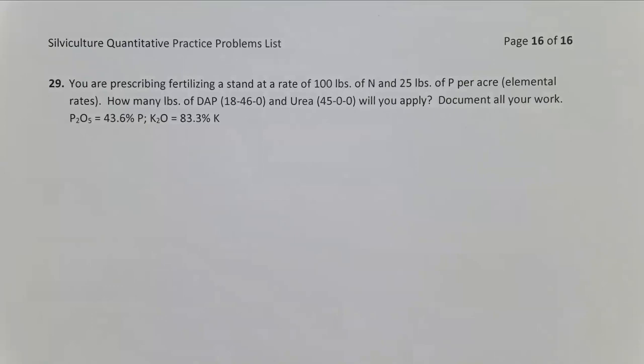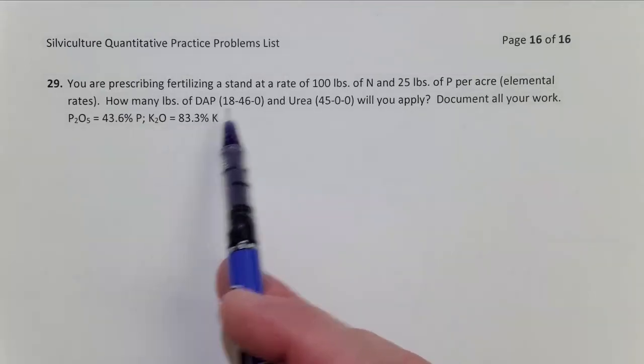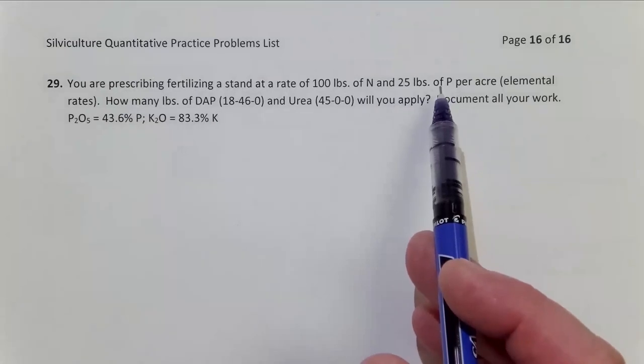So as we look at this problem, I'm going to show you a shorter way to do this because in the last two problems on fertilizer, you've seen how I've written everything out longhand. So I'll show you a shorter way to write this. So let's simply figure out how many pounds of DAP do we need to get 25 pounds of elemental phosphorus rate?